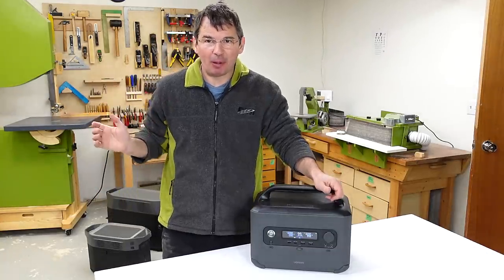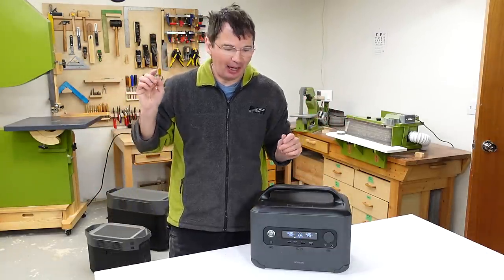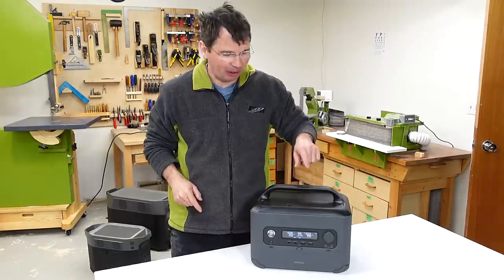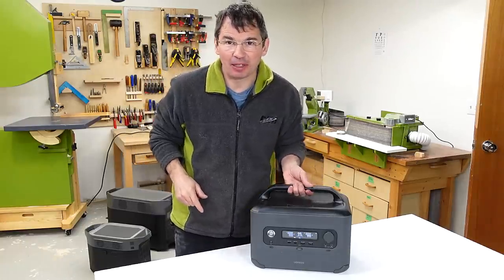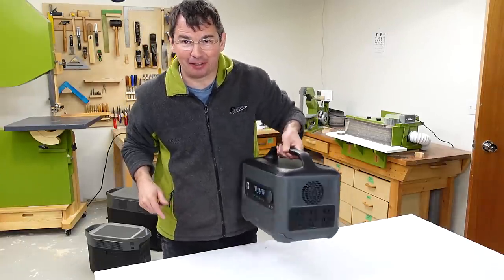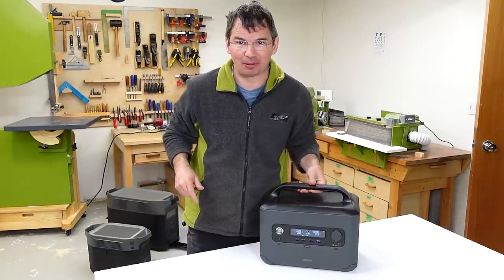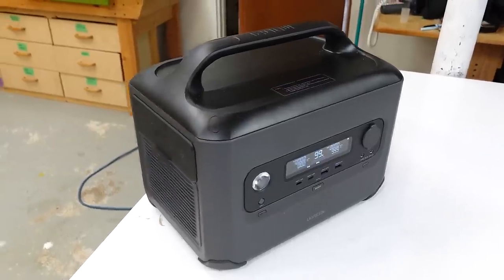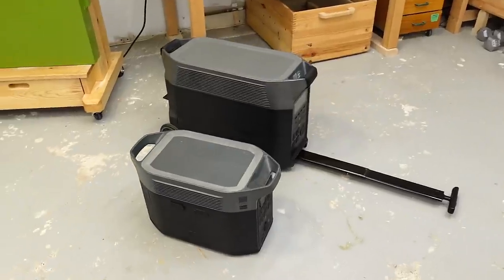I get approached about reviewing battery power stations from time to time, and I picked this one from Ugreen because it's got a handle on top, which means I can pick it up with one hand, because it only weighs 25 pounds. That is luggable, but not light, compared to these other brands of power stations.